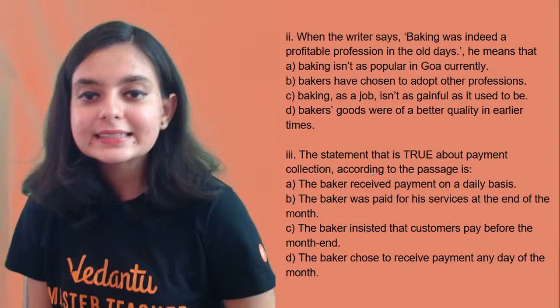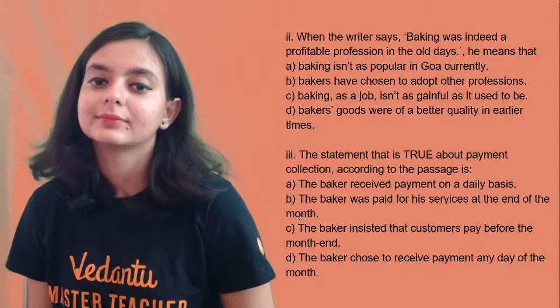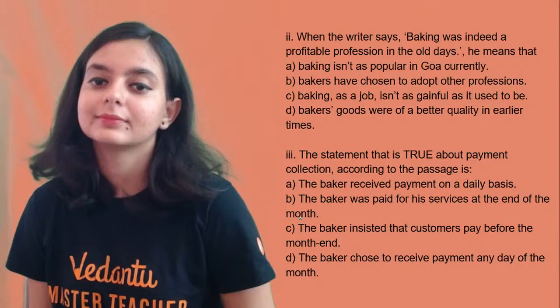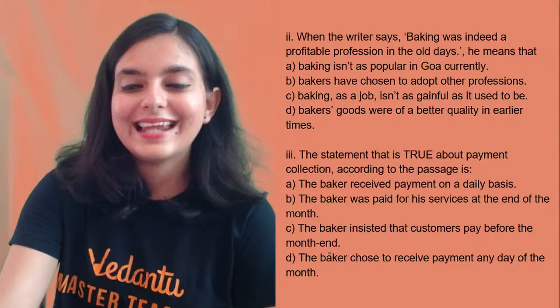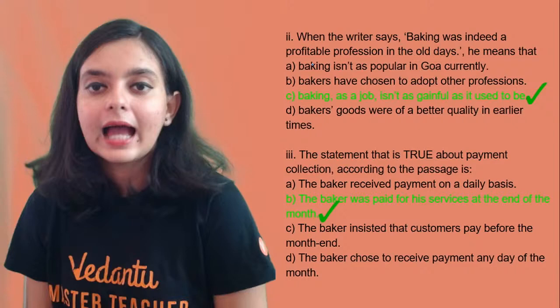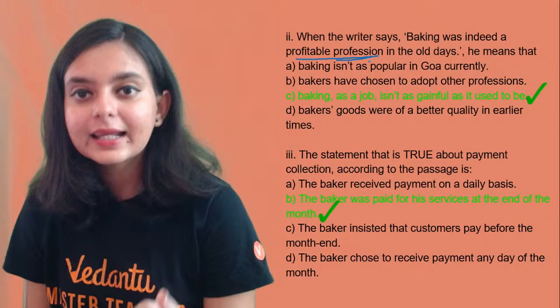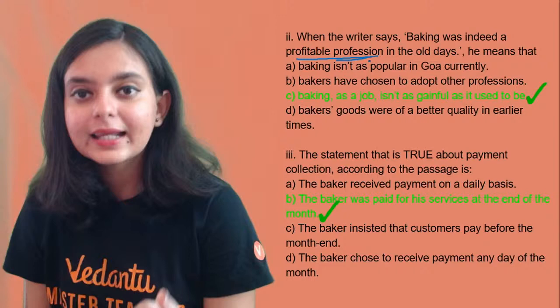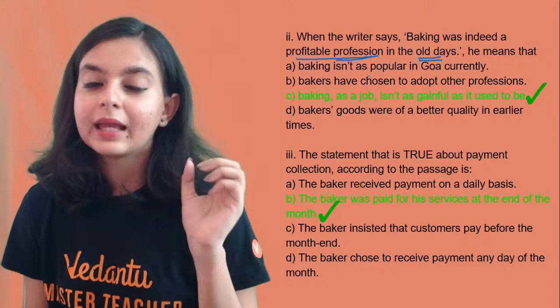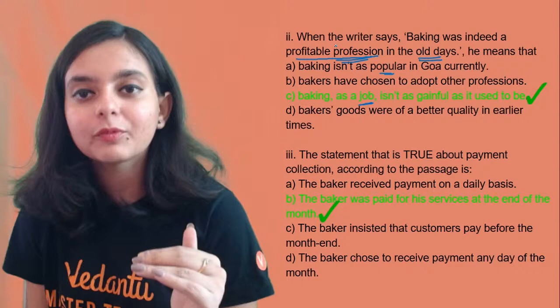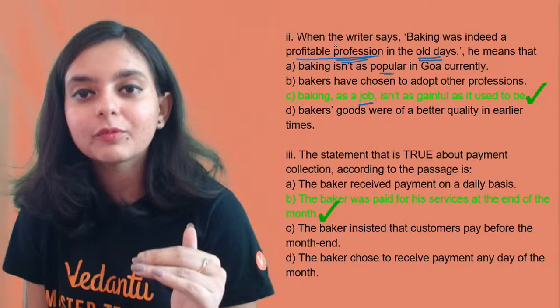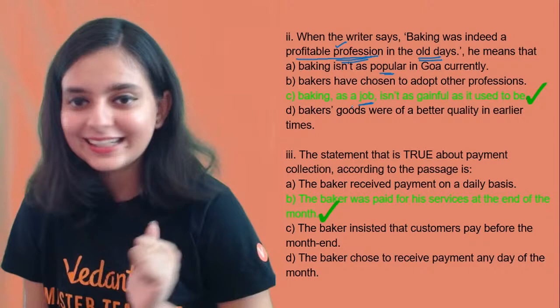The next question is about the statement that is true about payment collection. Most of you are saying D. The correct answer is C — read the sentence: 'baking was indeed a profitable profession in the old days.' It's talking about the profession, not about popularity. Baking as a job — profession — so the correct answer is C. Next is B: the baker was paid for his services at the end of the month — that is mentioned in the text, requiring careful reading.